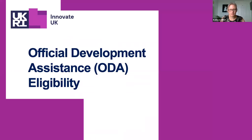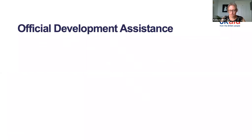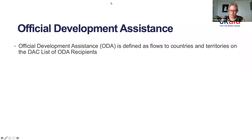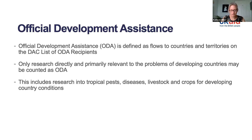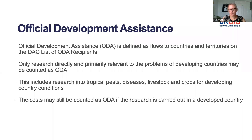Thanks Tim, and good morning everyone. I'll briefly give an overview of ODA, explain the question in the Agri-Tech Catalyst application form, and cover a few examples. The principle of ODA is that funds must benefit challenges faced by developing countries. ODA is defined as flows to countries on the DAC list of ODA recipients, and only research primarily relevant to problems of developing countries can be counted. Importantly, costs can still be counted as ODA if research is carried out in a developed country like the UK, as long as the benefits are in the developing country.